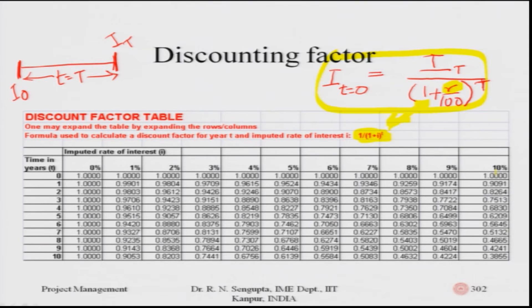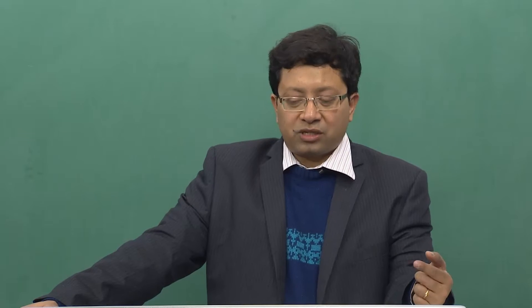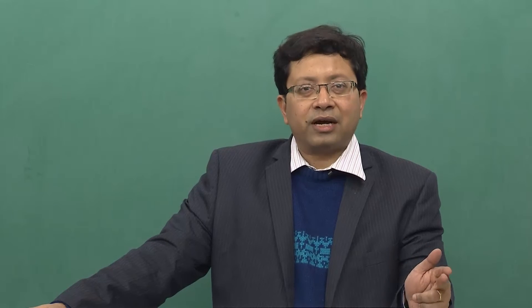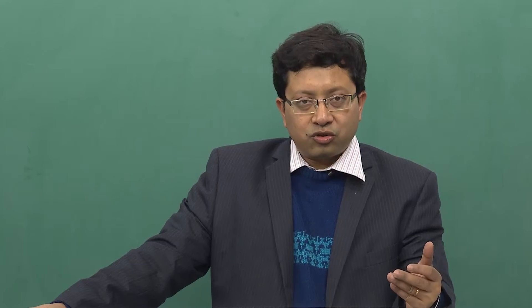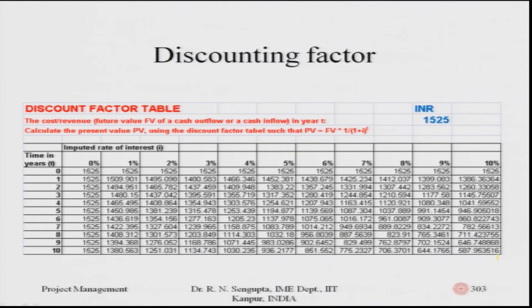Or say you are a new service provider — considering demonetization, internet banking and cashless transactions are new, and you have come up with a new payment facility that could compete with SBI Buddy or Paytm. You have a deadline, say February 2017, and milestones based on which to proceed. You make a plan to meet the goal within the deadline and manage any cost overruns to achieve the overall project goal.